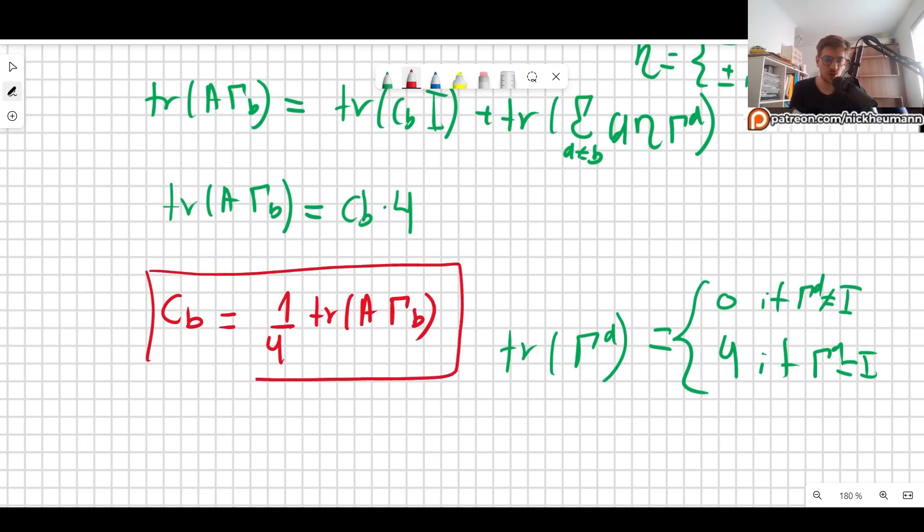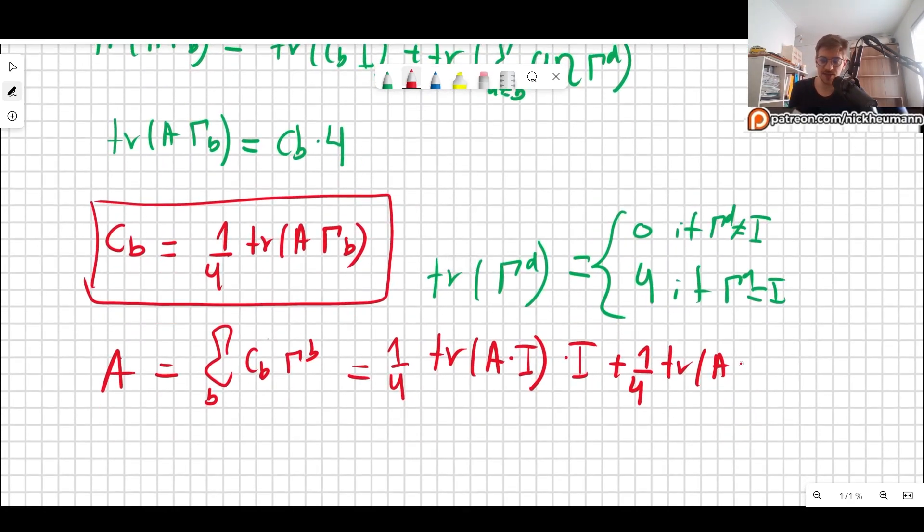So there you go. If you have some matrix A and you want to write it in terms of gamma matrices, then you write A is equal to, and then you have the sum. So sum over B, c_B gamma B. What is c_B? Well, for example, in the first case, you would have to put in here, so that would be 1 over 4 times the trace of whatever A is times the identity matrix. And then you have to multiply this by the identity matrix, times the identity matrix, plus 1 over 4, the trace of A times, and now you have to multiply each of the gamma mus. So let's say gamma 0 first, times gamma 0, and then, you know, so on and so forth. You do it for every single one, and you will get your A back.